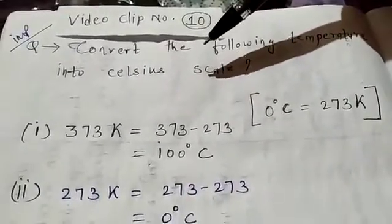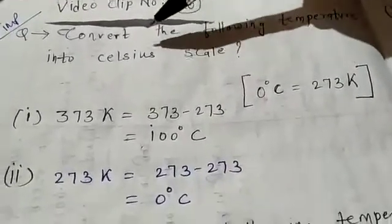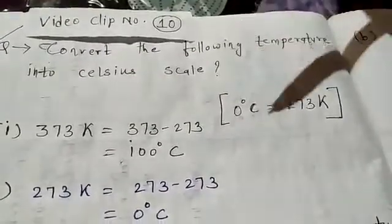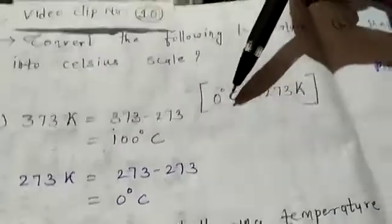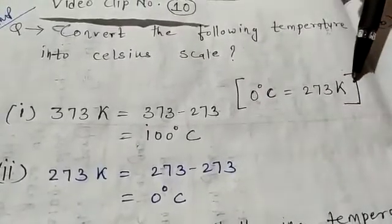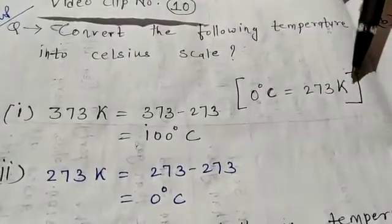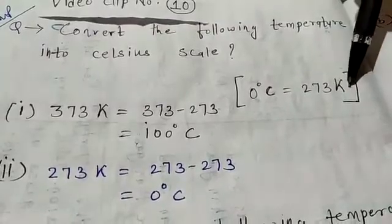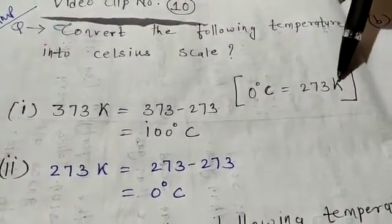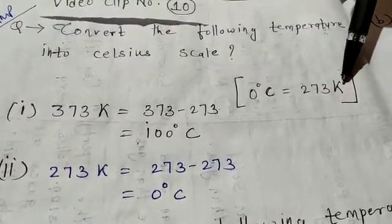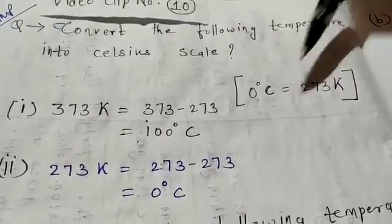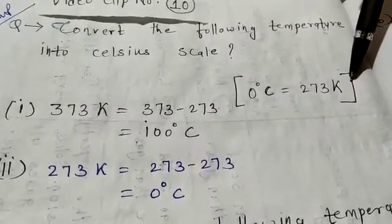0 degree Celsius is equal to 273 Kelvin. Write K in capital letter — not degree K, just 273 K. So, 0 degree Celsius is equal to 273 Kelvin.